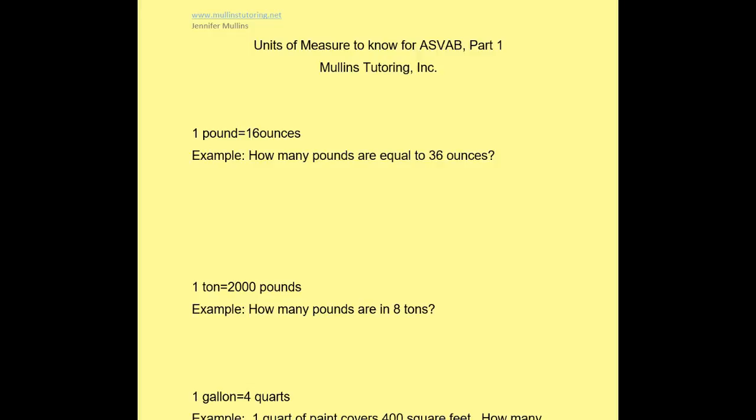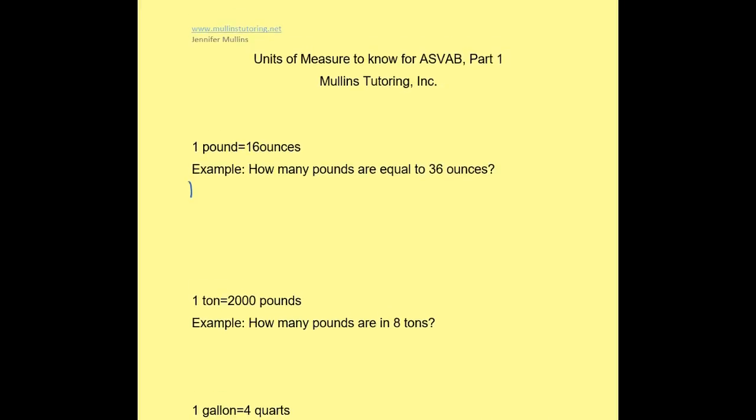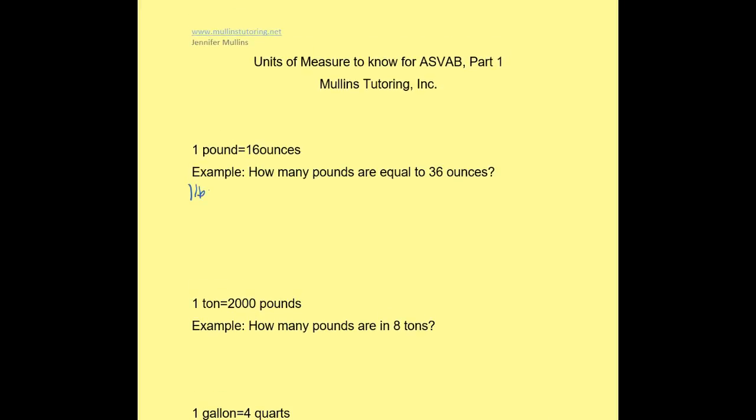So the first thing I want to do is write down my ratio: 1 pound is equal to 16 ounces, and that's the ratio I'm going to keep throughout. So for every pound that I have, it's going to be equal to 16 ounces. Therefore, 2 pounds would be equal to 32 ounces. All I'm doing is multiplying 2 times 16, and this keeps the ratio.